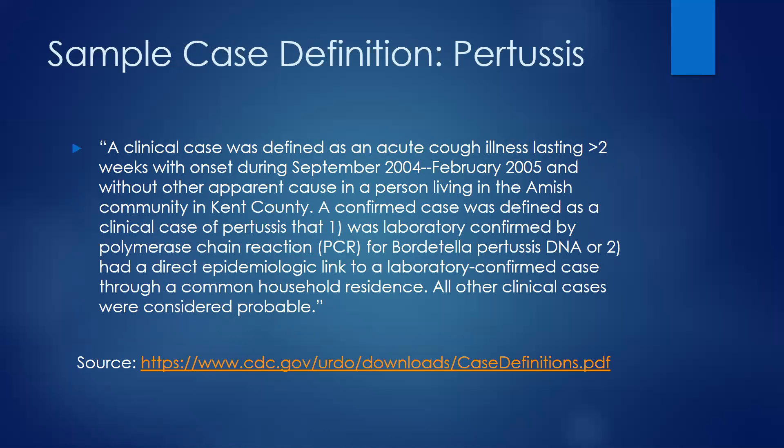There are a few examples here in the slides. This first one for pertussis has both symptoms and clinical presentation, but it also has very specific dates unique to this outbreak — place of residence, the months during the year. And then for the confirmed cases, it tells specifically what type of lab test needs to be done for it to be considered a confirmed case.